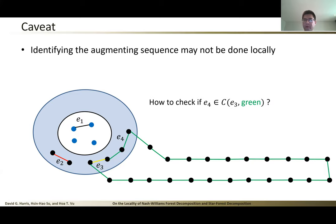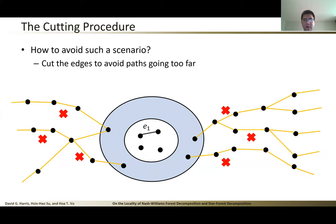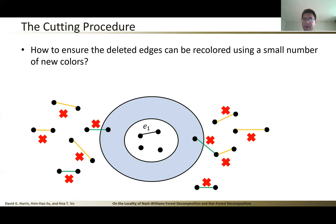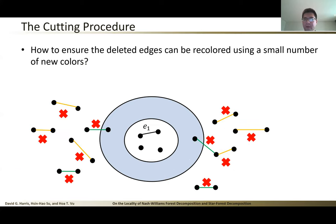How to resolve this issue? What we did is that we developed a cutting procedure that basically removes some of the edges to avoid the paths to go too far away from the component of E1. We do that for every color. In the end, you will get a bunch of edges that are removed throughout the algorithm. Then we will recolor these edges using new colors. But we have to ensure that these edges can be colored using a small number of new colors. How do we do that?